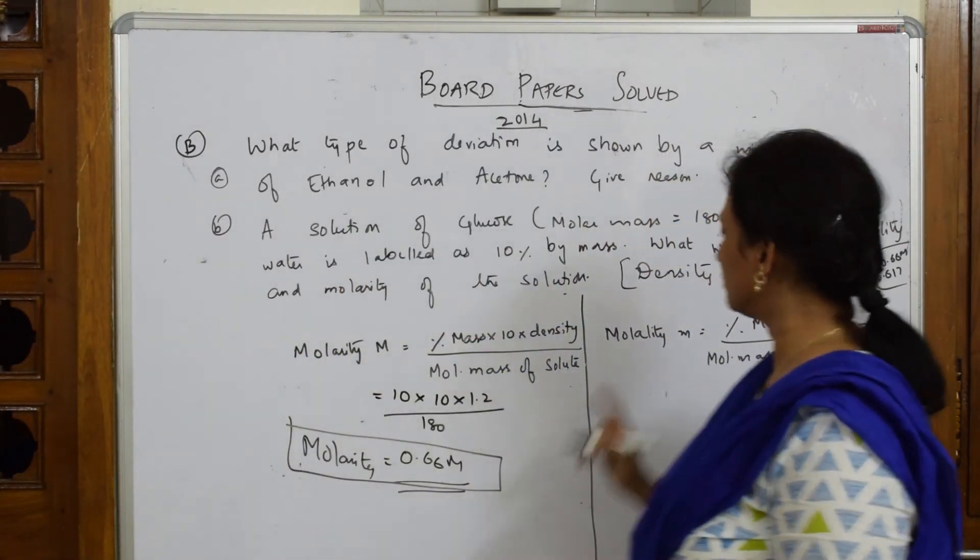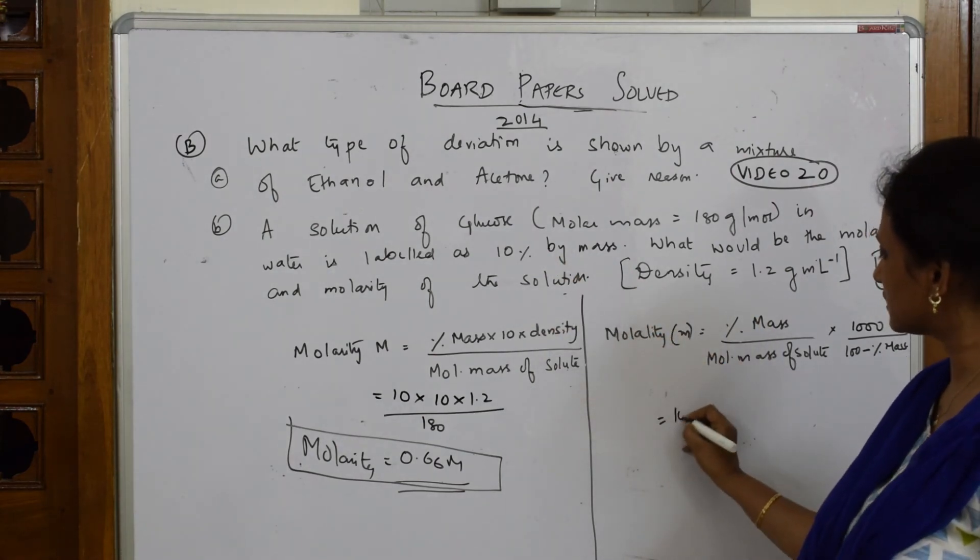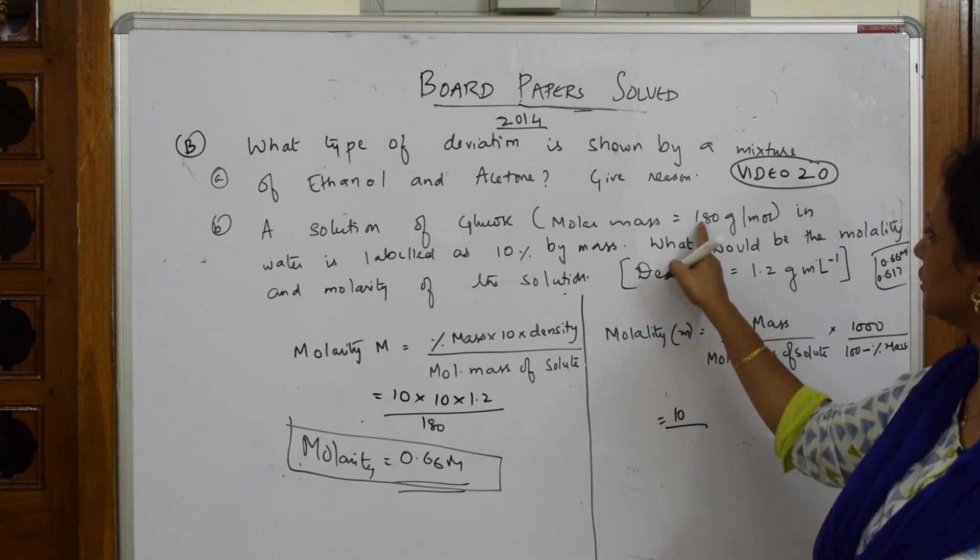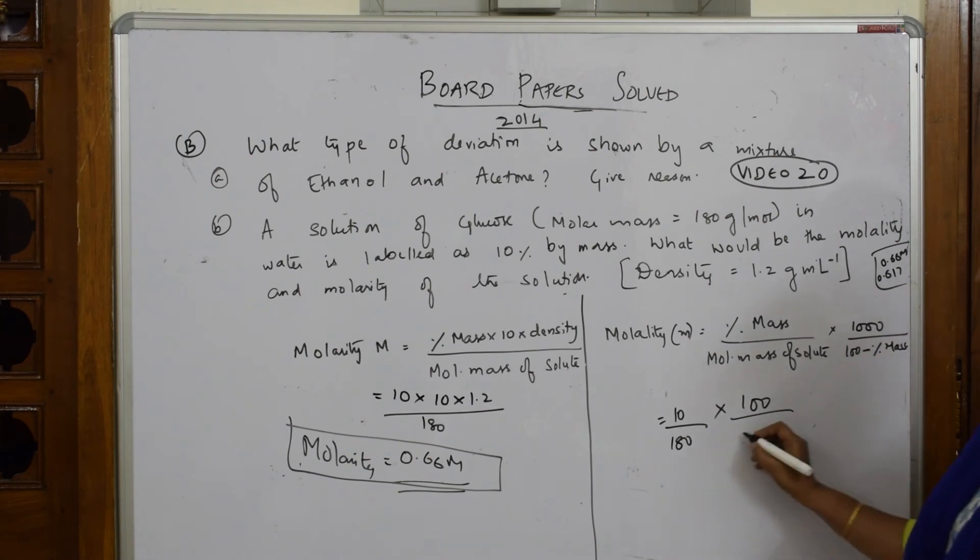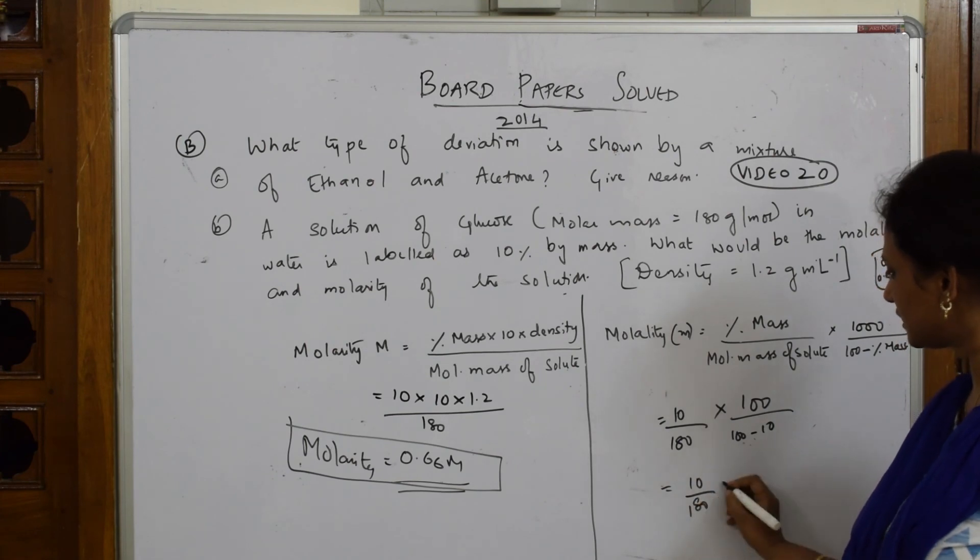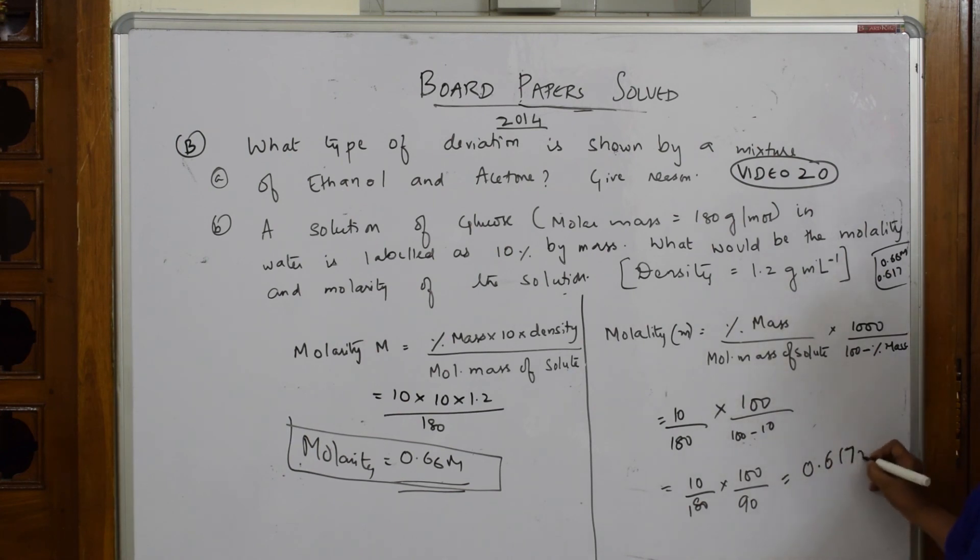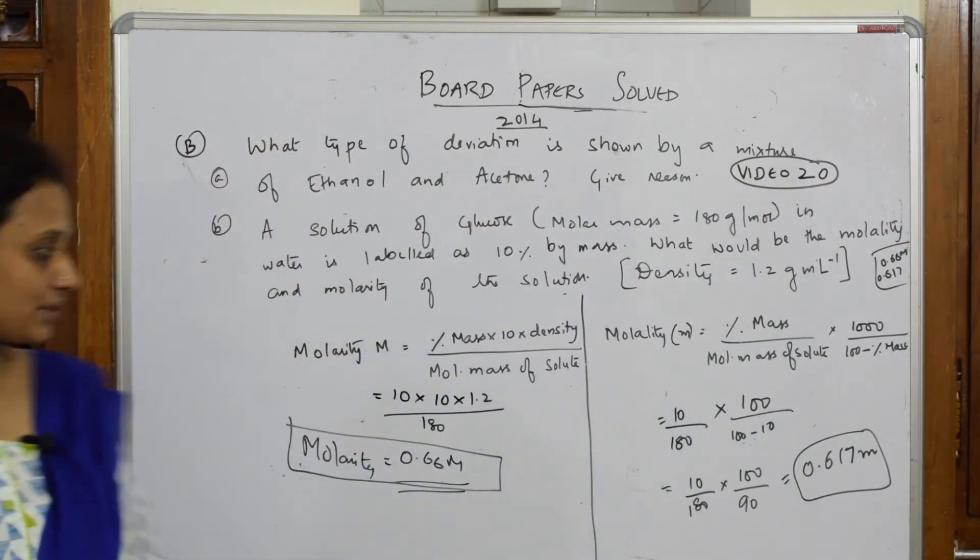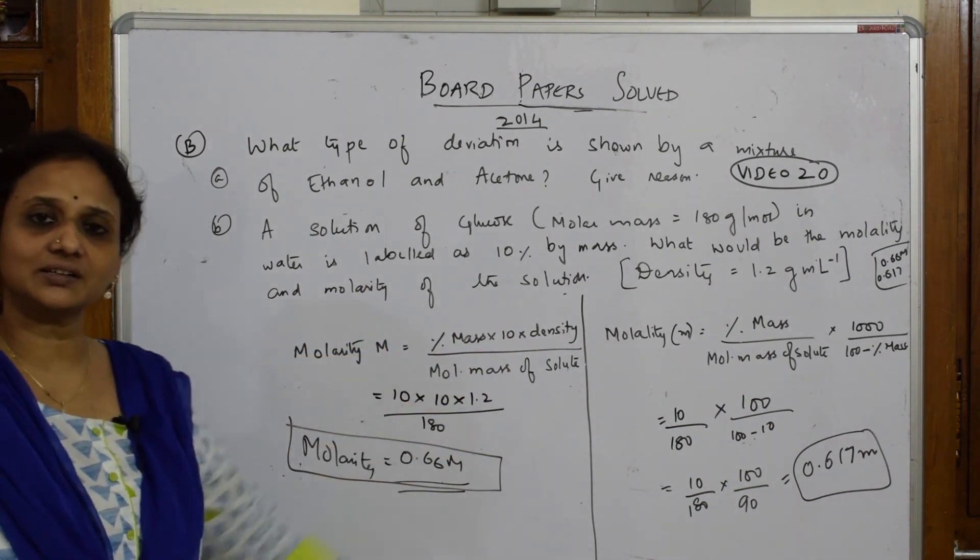Let's come back and calculate molality now. Molality denoted by small m. Now what is the percentage by mass? Again the same thing, you have 10, what is the molecular mass of the solute? 180 grams, into 1000 by 100 minus percentage of mass, 100 minus 10 grams. So this comes to 100 by 180 into 1000 by 90, which is equal to 0.617 small m because it is molality. So this is your answer. It's simple, isn't it? I just took the formula, I memorized the formula. I'm asking you to memorize the formula, substitute the values and get the answer and write the units.